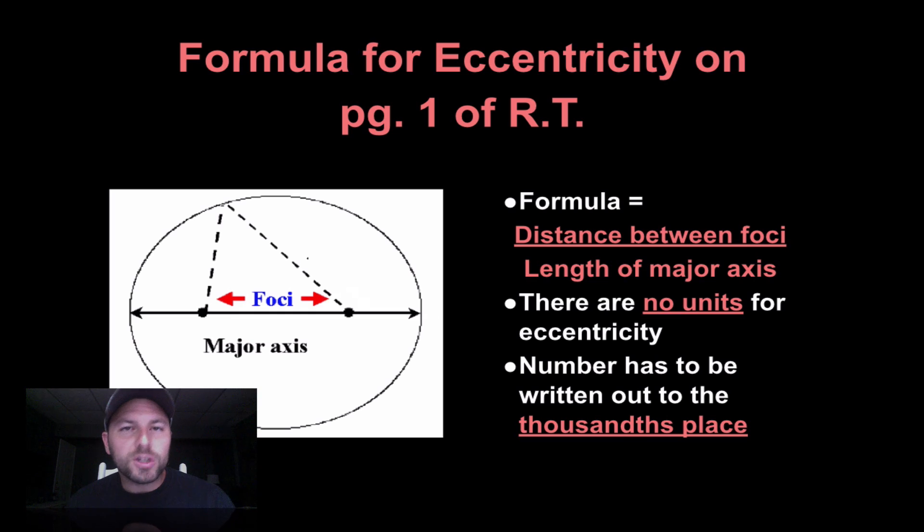If we go to page one of our Earth Science Reference Table, we will see that the formula for eccentricity is the distance between foci over the length of major axis. No units, and the number has to be written out to the thousandth place and will be between zero to one. So you will get decimals for this.